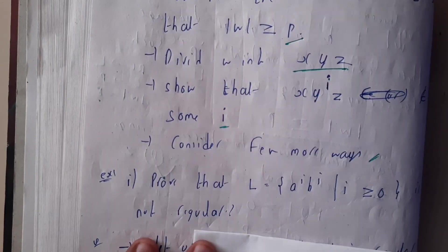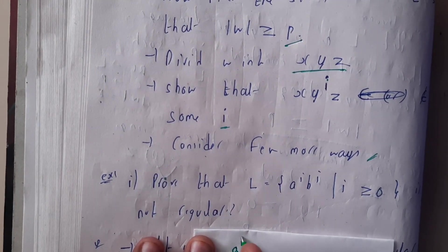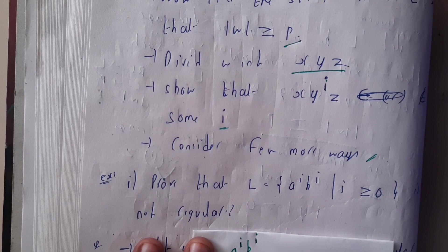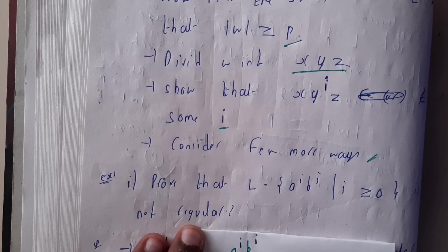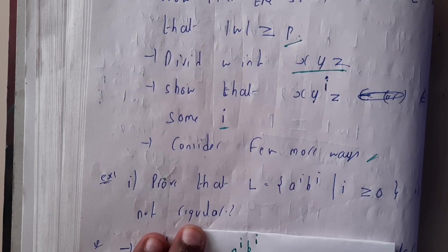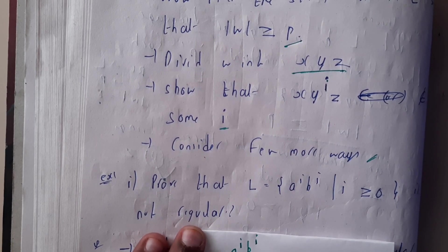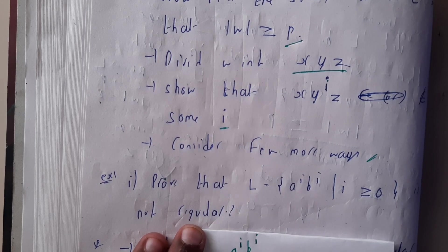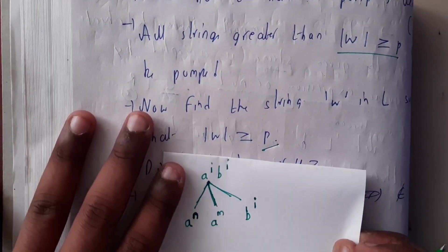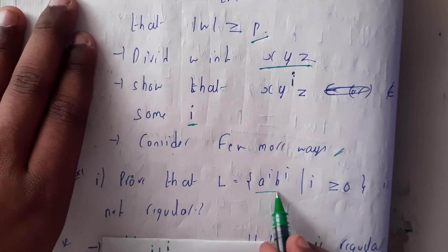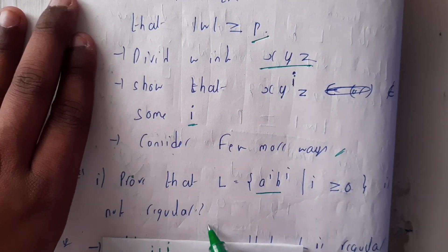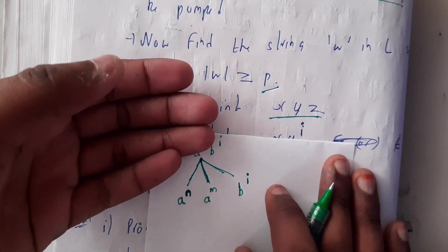Using a small piece of paper for the explanation: for a^i = b^i, we break the string into three parts. The first part x contains a^n, the middle part y contains a^m, and the last part z contains b^i. The condition is that n plus m equals i. We are given to prove that a^i b^i where i > 0 is not regular.